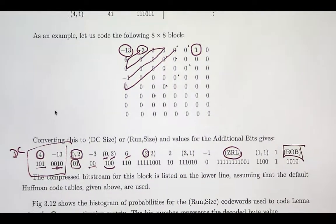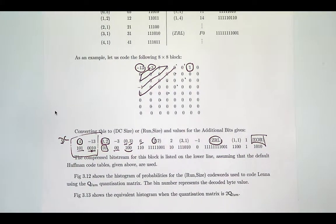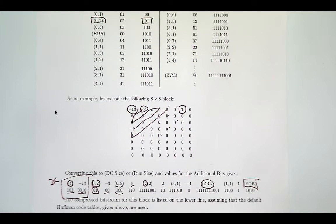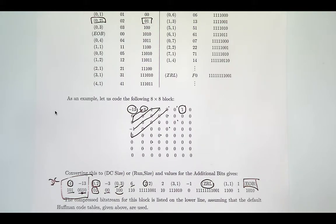The key takeaways are: first, the tricks JPEG uses — differential coding for the DC coefficient; second, the zigzag pattern for ordering coefficients; and third, the treatment of zeros, since you expect lots of zeros, using a run-length encoding system with special symbols to indicate how many zeros are coming in your stream.